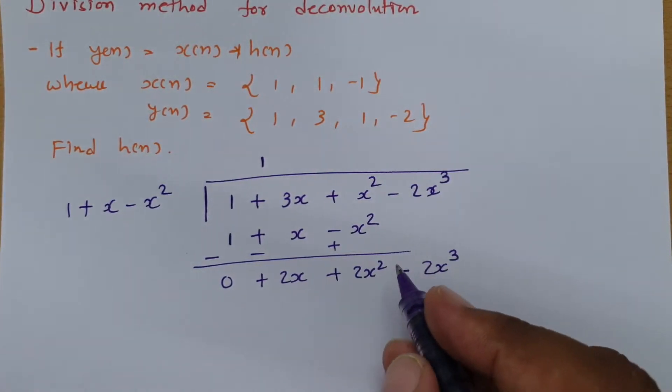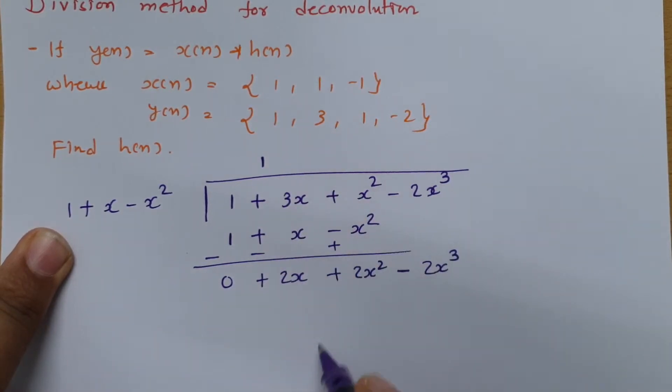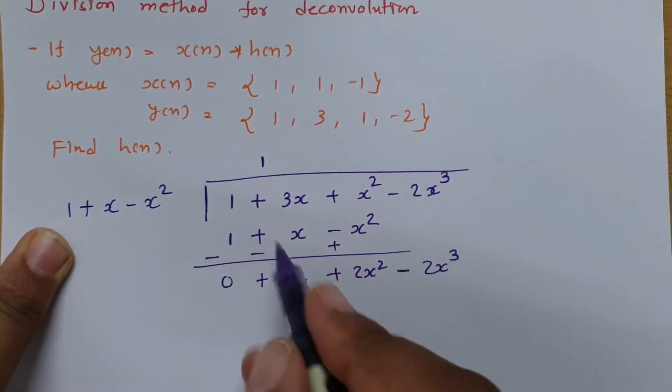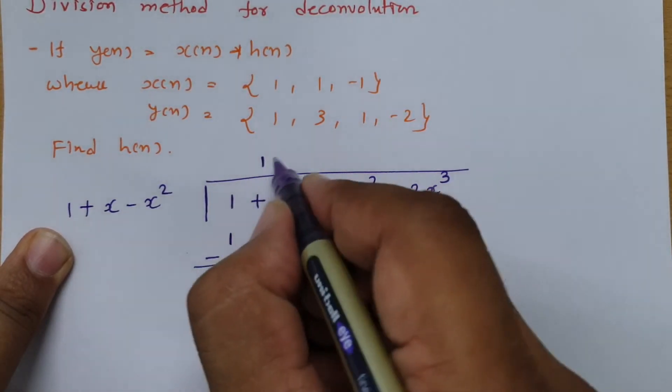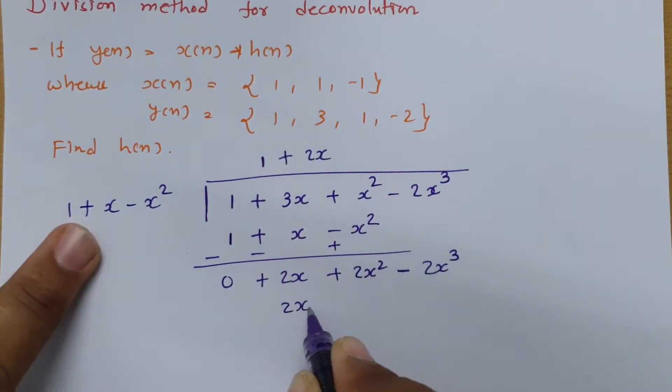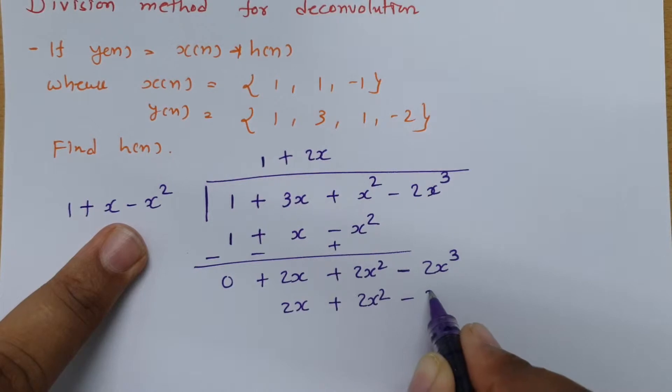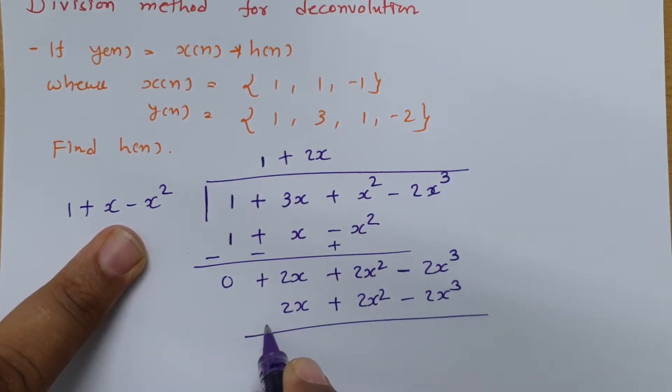Now multiply 2x with this to have the further solution. If I multiply 2x with this, it gives 2x + 2x² - 2x³.